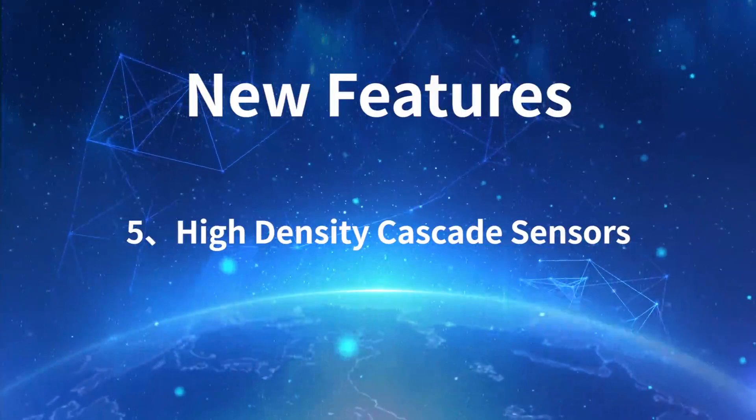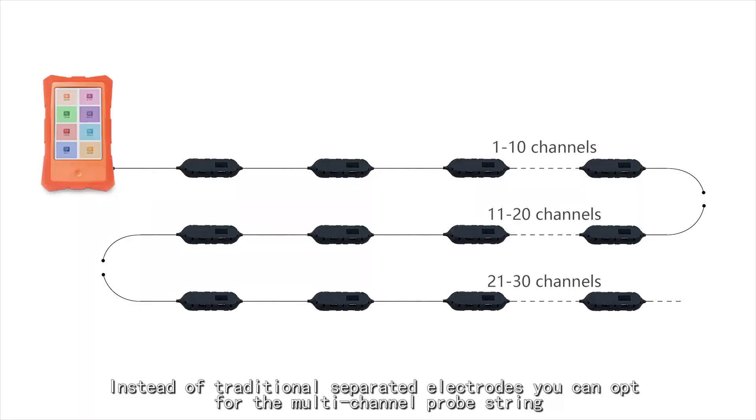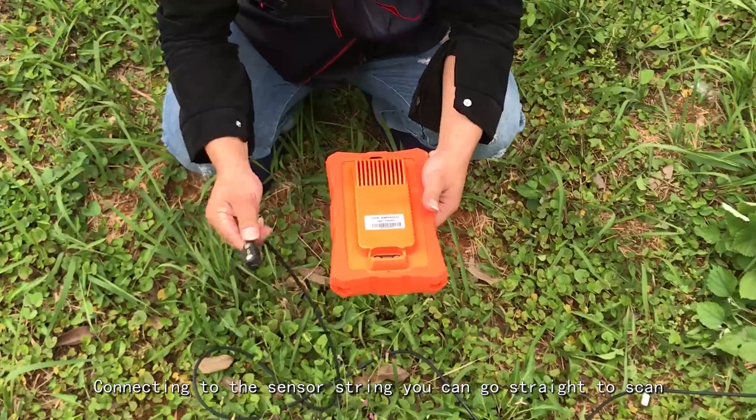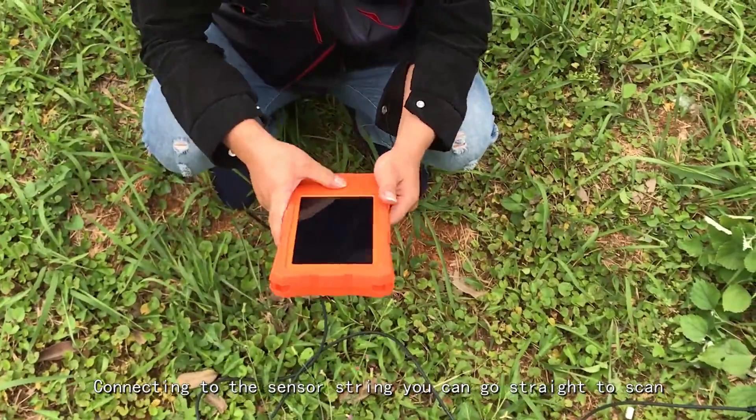Feature 5: High-Density Cascade Sensors. Instead of traditional separated electrodes you can opt for the multi-channel probe string, which is free from any ground condition restrictions. Connecting to the sensor string you can go straight to scan.